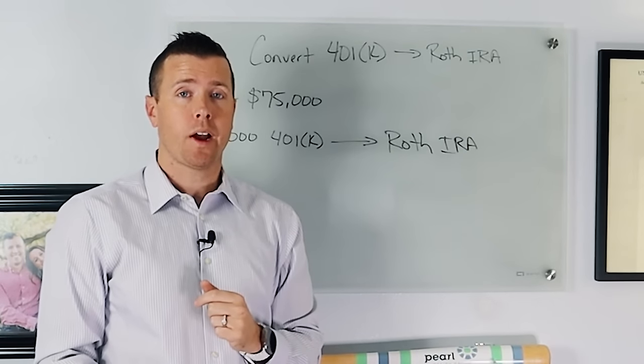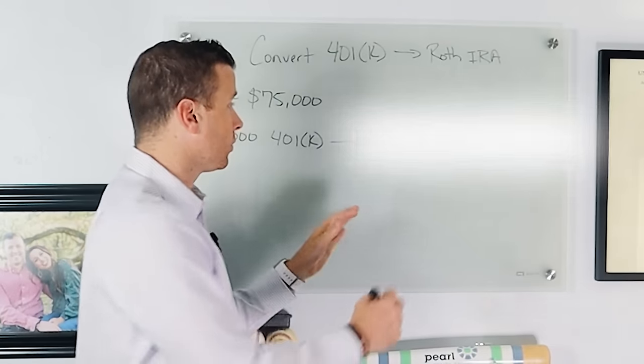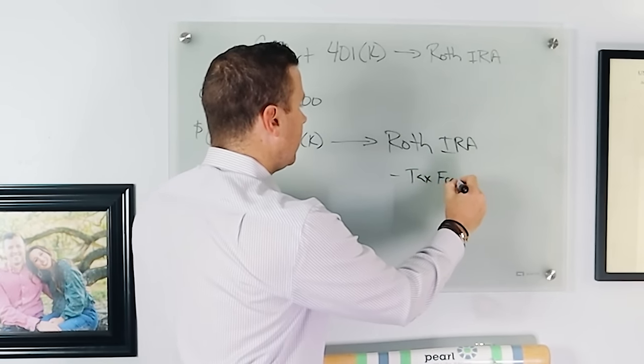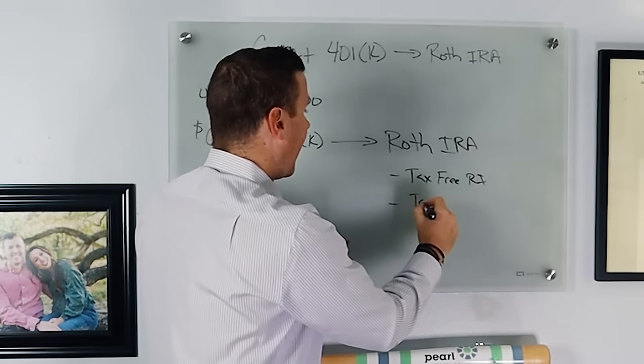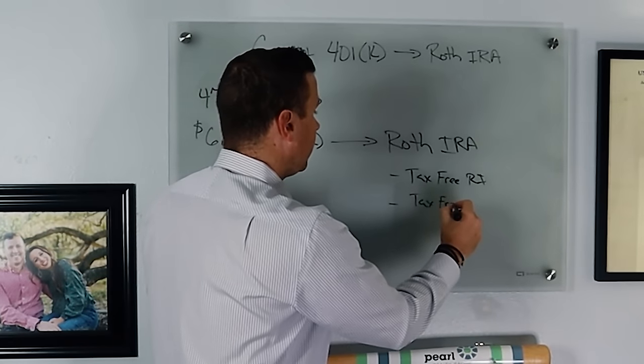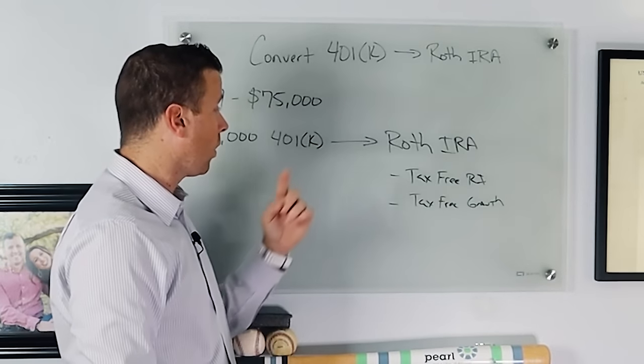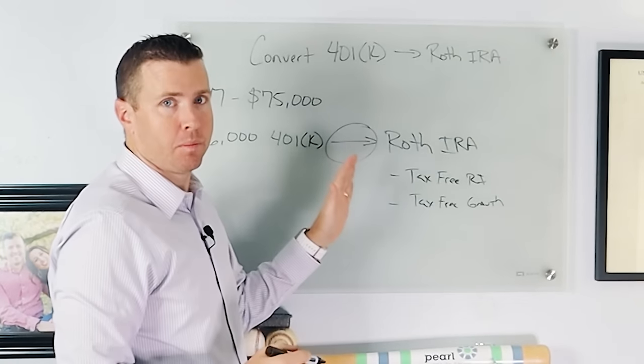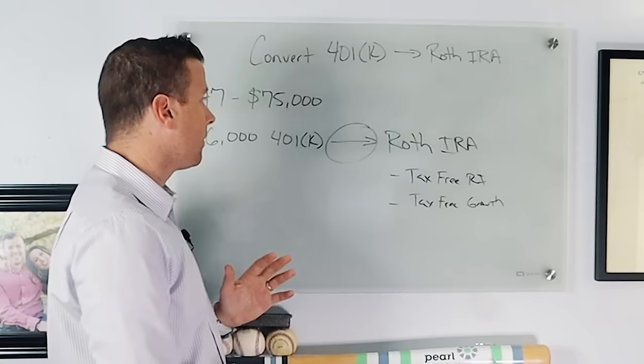Well, the benefits of a Roth IRA are tax-free income once you get into retirement. So a Roth IRA offers tax-free retirement income. It also offers tax-free growth. So essentially, if you're going to move money from a 401k to a Roth IRA, at this middle period, you're going to pay taxes on the money.